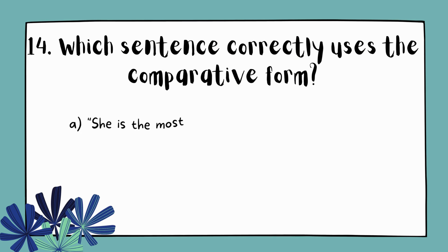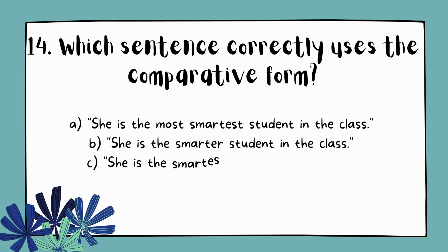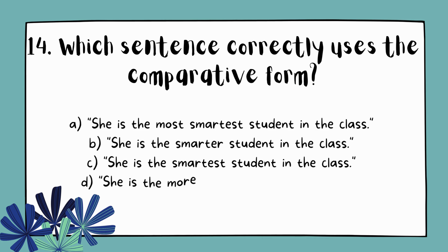Question 14. Which sentence correctly uses the superlative form? A. She is the most smartest student in the class. B. She is the smarter student in the class. C. She is the smartest student in the class. D. She is the more smart student in the class.